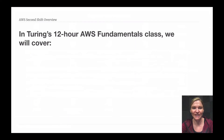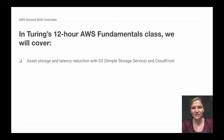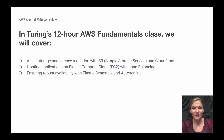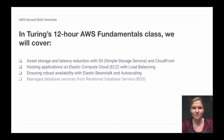In our 12-hour AWS Fundamentals class, we'll cover multiple topics. We'll look at asset storage with a service called S3, and also reduce latency by delivering your static assets through a service called CloudFront. We'll create EC2 instances to host applications and use load balancers to distribute HTTP traffic equally. We'll use Elastic Beanstalk to deploy Rails and Node applications and set up auto-scaling to increase or decrease compute power depending on certain metrics. We'll also add databases to our Rails and Node applications using Amazon's RDS service, and then put together the entire deployment process with a service called CodePipeline that uses GitHub hooks.